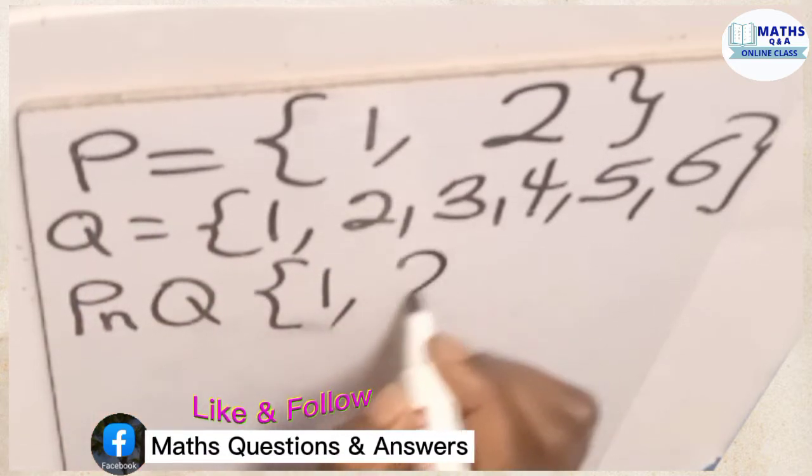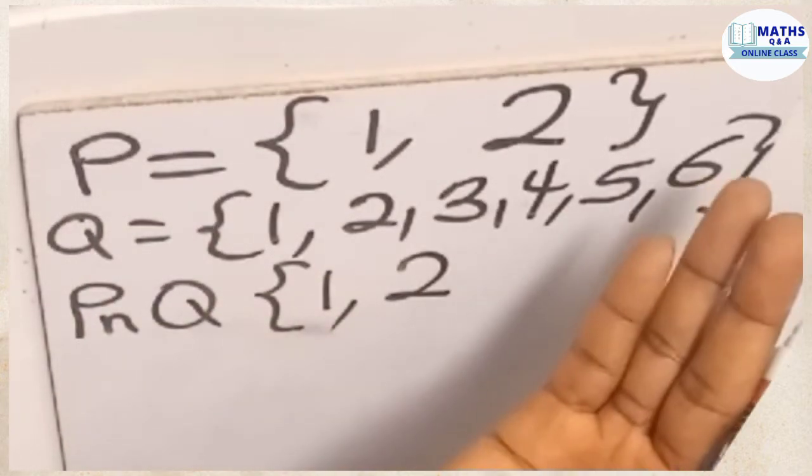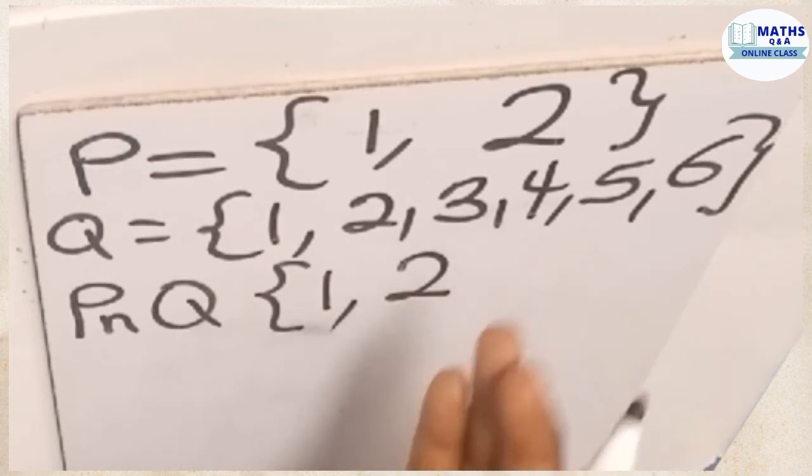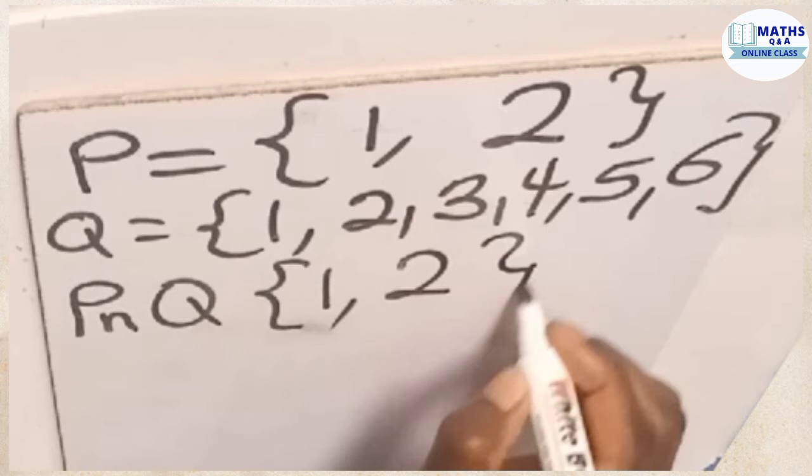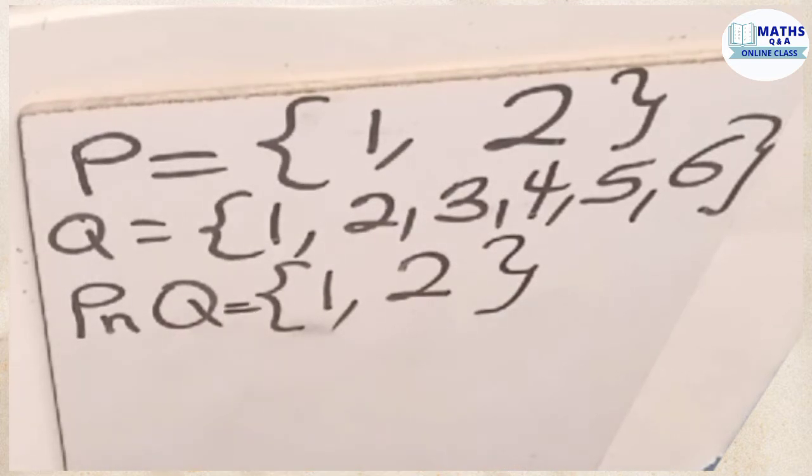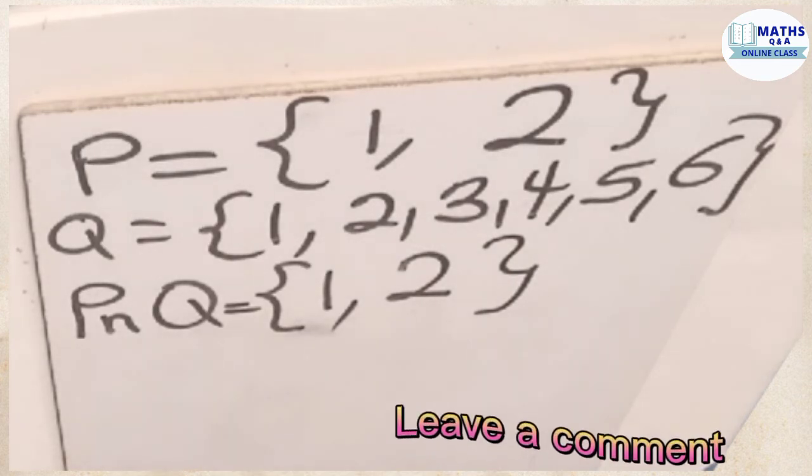So we write 2. There are no other members in set P which can also be found in set Q. So we close our brackets. So these are the numbers that can be found in set P and can also be found in set Q. So that is the intersection of P and Q.